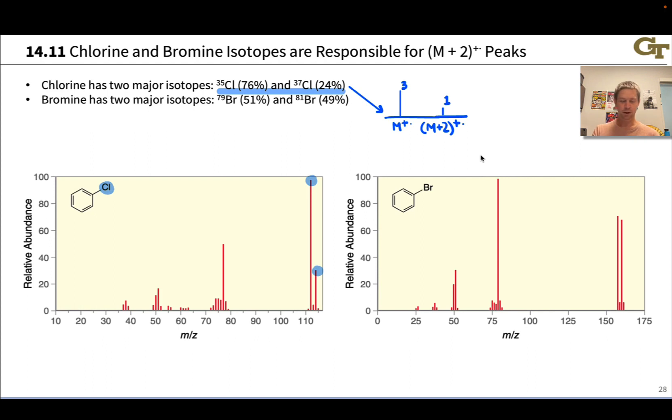In bromobenzene we have a one to one ratio of the M and M+2 peaks, and this is due to the presence of the bromine and approximately equal abundances of bromine-79 and bromine-81.